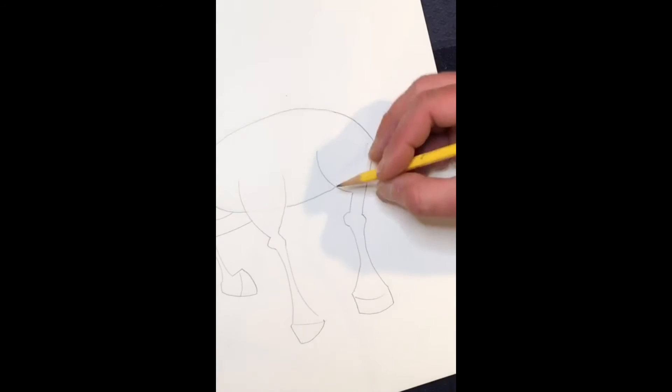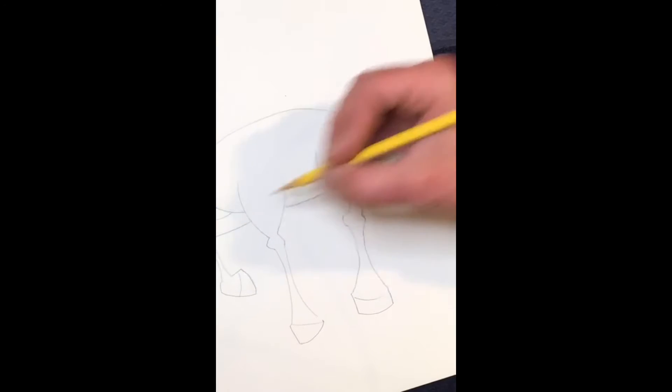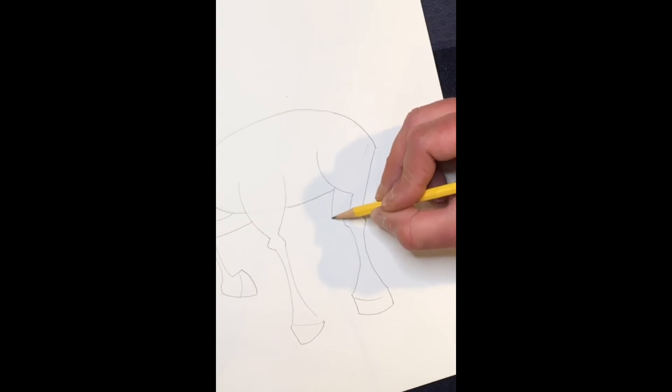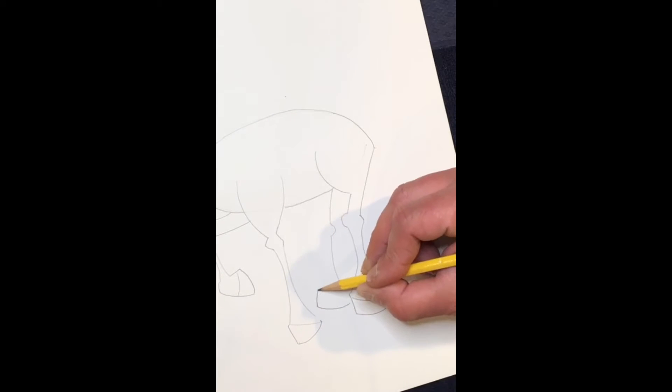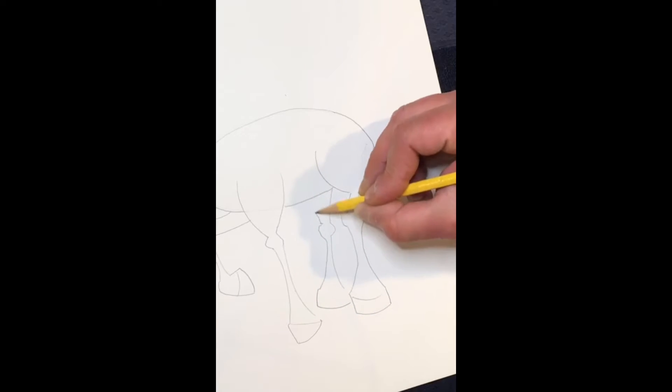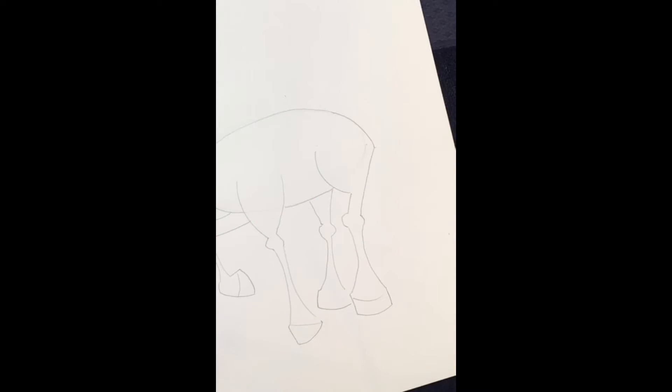Now we're going to do the same thing with the fourth leg. Like this one is behind. So we're only doing part of it. Down, knob your knee, shoot down. Don't go as far as this hoof because it's back here. Across for the hoof. Again, narrow shin, knee, and up for the other part of the back.